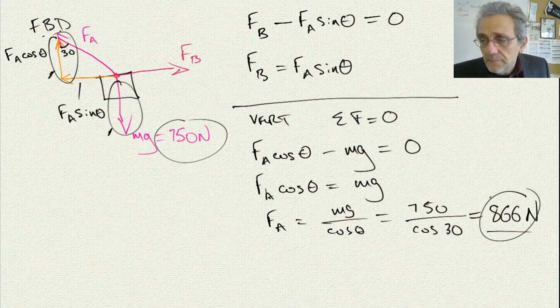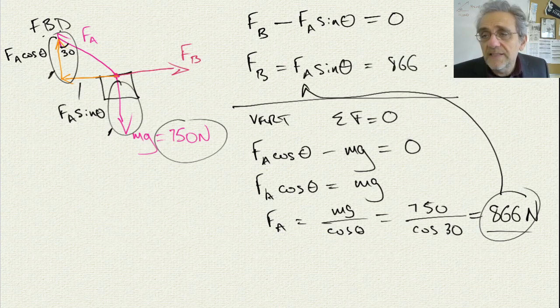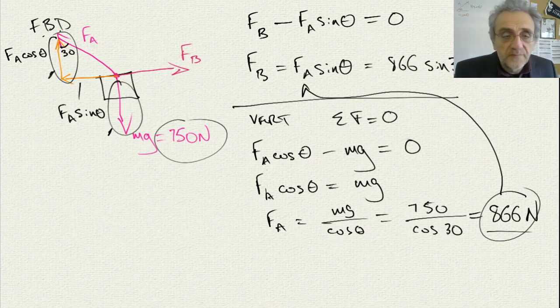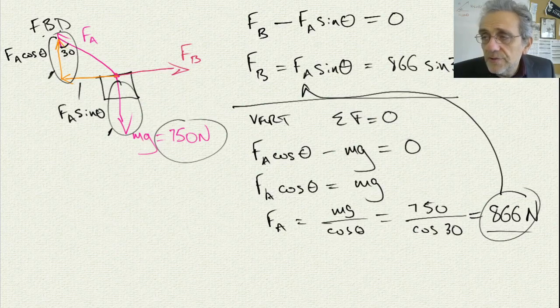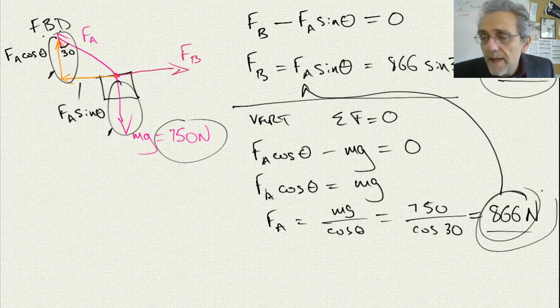Now I can take that answer and put it into here, this equation. And I'll go 866 times sine 30. And that's going to give me 433 newtons. So that's FB and that's FA. And we're done this problem.